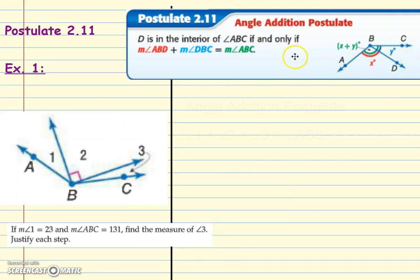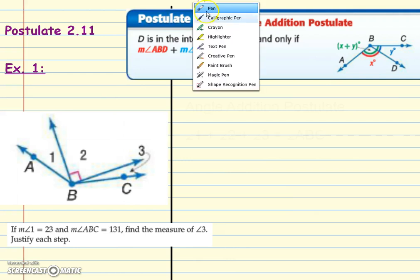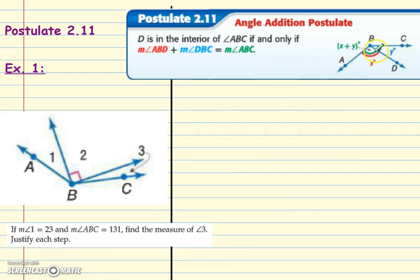First, we have Postulate 2.11, the Angle Addition Postulate, which is very similar to the Segment Addition Postulate. I'm going to highlight this part and I suggest you do the same. We've got angle ADB — if D is inside angle ABC, then ABD plus DBC equals ABC. So part of the angle plus the other part equals the whole angle. In your theorem book, highlight: part plus part equals whole.